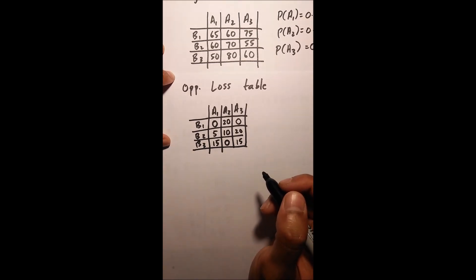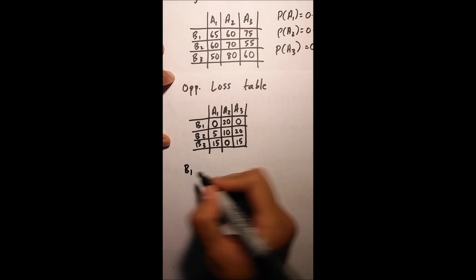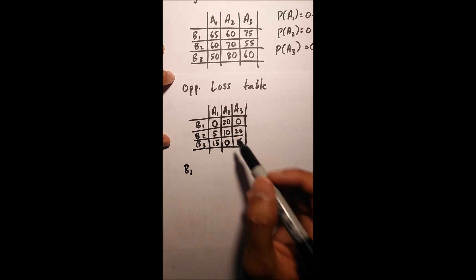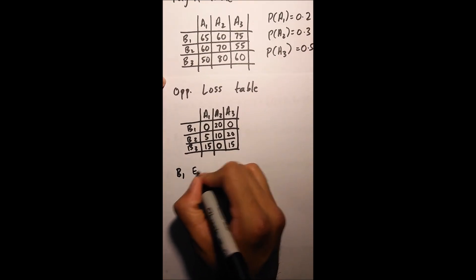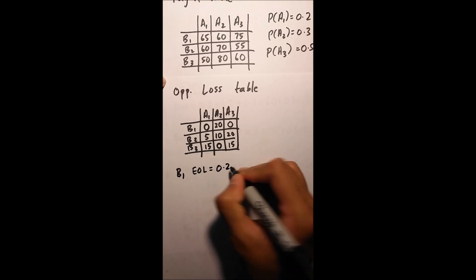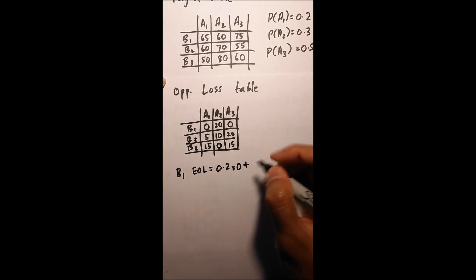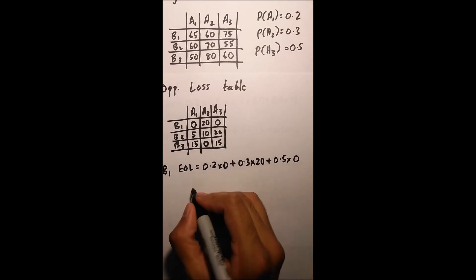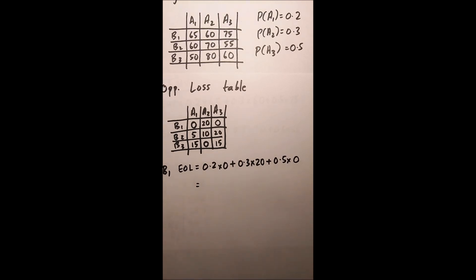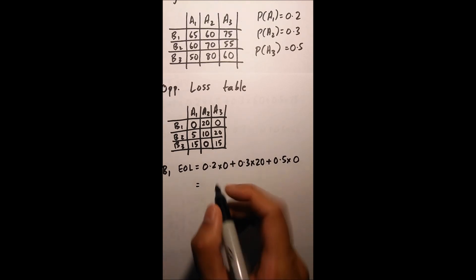Okay, next you'll find my EOL, which is my expected opportunity loss. It's pretty much the exact same thing, except instead of using my payoff table, I'm going to use my opportunity loss table. So for B1, my EOL is going to equal 0.2 times 0 plus 0.3 times 20 plus 0.5 times 0, which is 6.